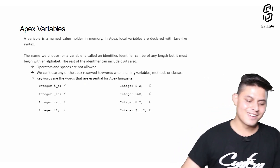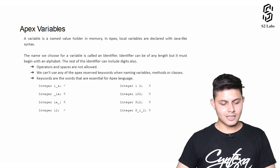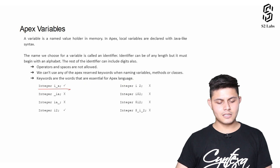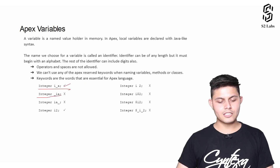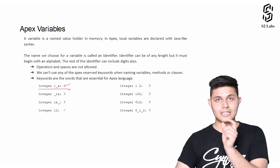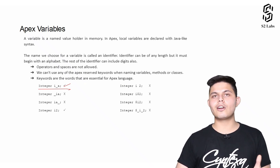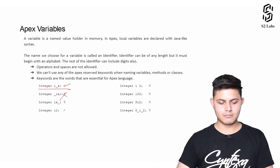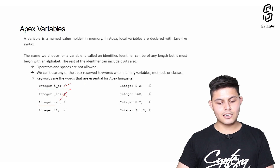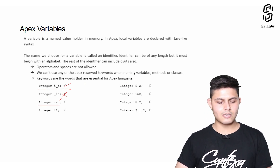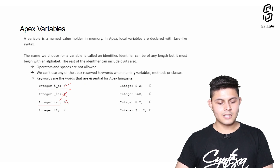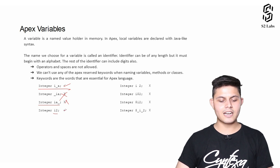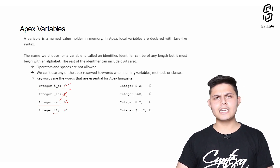Let's look at examples: 'integer i' — this is a correct variable declaration. 'integer i_a' with underscore in the middle also works. However, '_ia' starting with an underscore is not allowed in Apex and will return an error. 'ia_' with an underscore at the end is also not allowed. 'integer i2' — numbers are allowed in variable names or identifiers, so this will work.